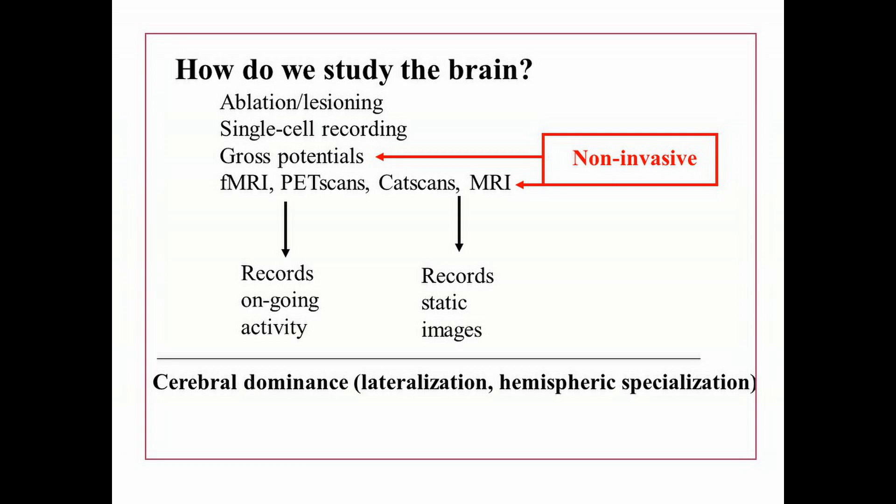Here's how I want you to think about it: some of these techniques are invasive — ablation, lesioning, and single cell recording are all invasive techniques for studying brain functioning. On the other hand, EEGs or gross potentials, fMRI, PET scans, CAT scans, and MRIs are non-invasive. They do not harm the individual or cause tissue damage of any sort while they're being conducted.